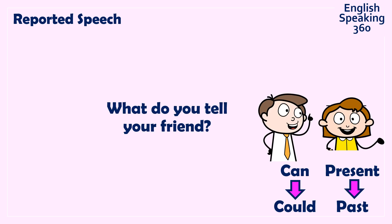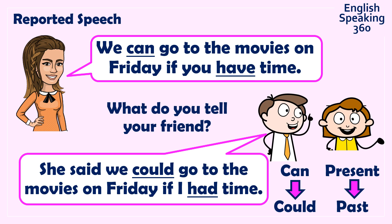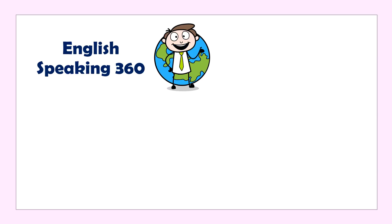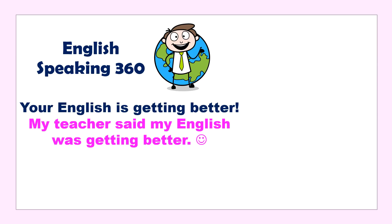This one is a little bit long: 'She said we could go to the movies on Friday if I had time' — 'can' becomes 'could' and 'have' becomes 'had' in the past tense. How about this one? Your English teacher says 'Hey, your English is getting better' — now tell your friend. My teacher said my English was getting better.